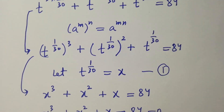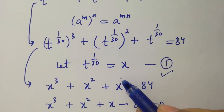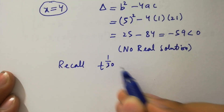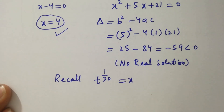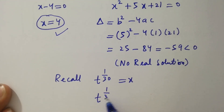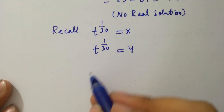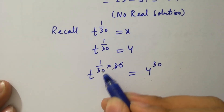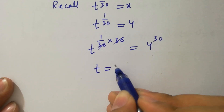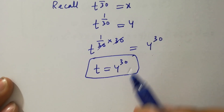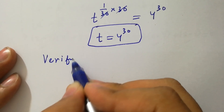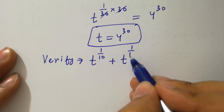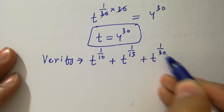Recalling the first equation, t to the power 1 over 30 equals x, where x equals 4, we have t to the power 1 over 30 equal to 4. Raising both sides to the power 30, we get t equal to 4 to the power 30. We can verify by substituting back: t to the power 1 over 10 plus t to the power 1 over 15 plus t to the power 1 over 30 equal to 84.